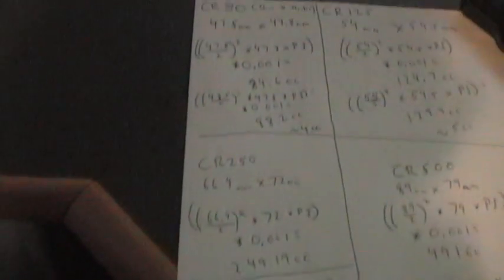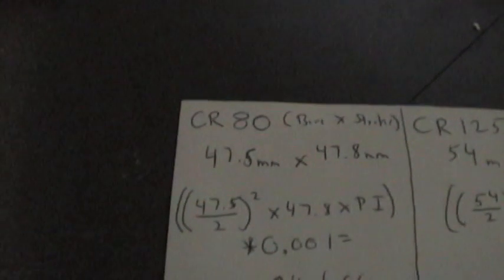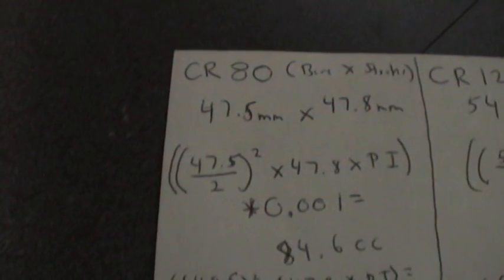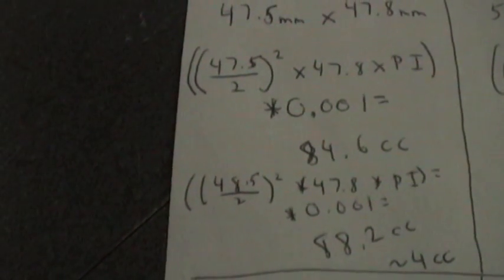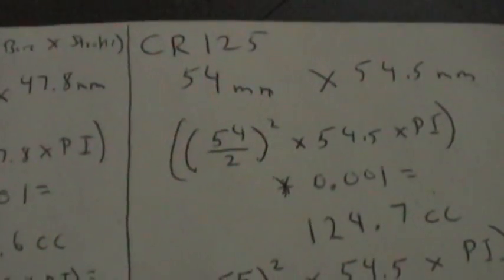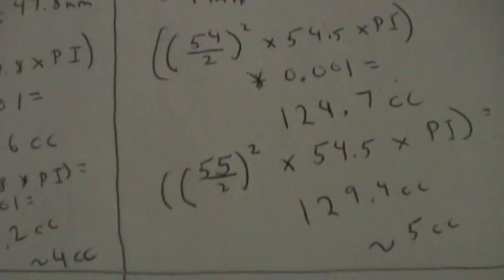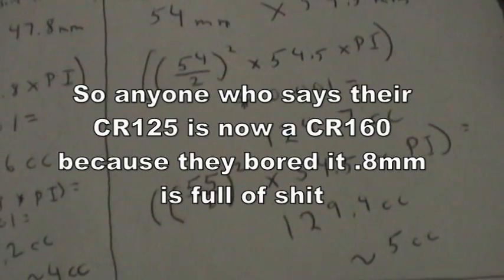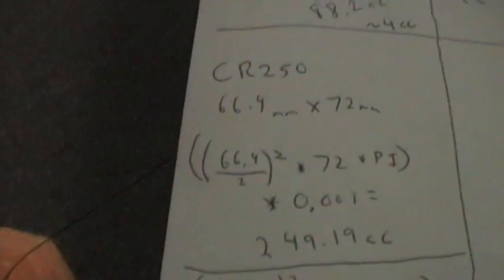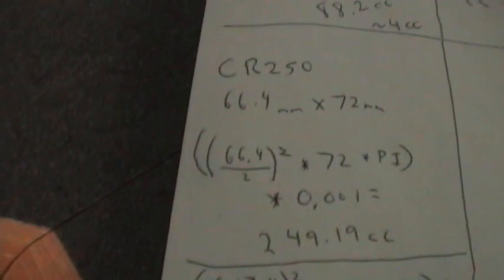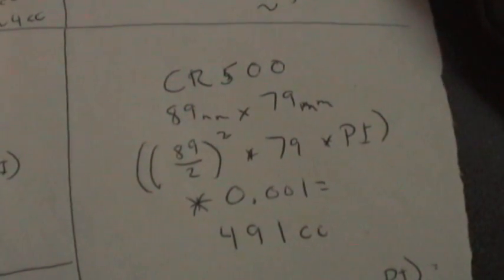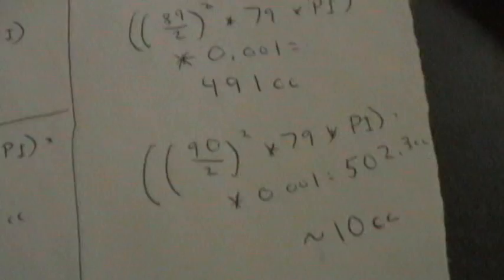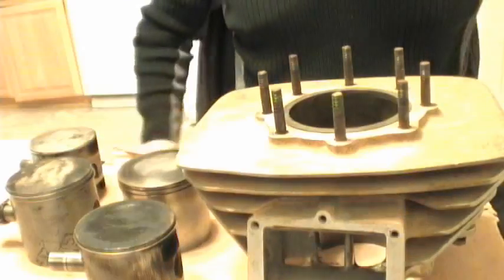On this piece of paper I've calculated several bikes: the CR 80, CR 125, CR 250, and CR 500. The CR 80 stock is 84.6 cc's; bored out 1 millimeter it's 88.2 cc's, approximately a 4 cc gain. The CR 125 stock bore is 124.7 cc's; 1 millimeter over gives 129.4 cc's, approximately a 5 cc gain. The CR 250 stock is 249 cc's; 1 millimeter over is 256 cc's, approximately a 7 cc gain. The CR 500 stock is 491 cc's; 1 millimeter over is 502 cc's, approximately a 10 cc gain.